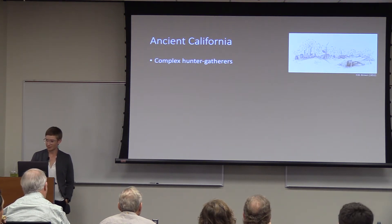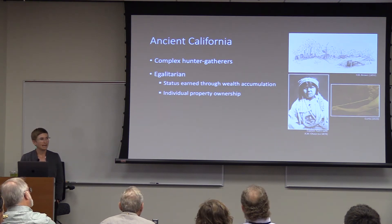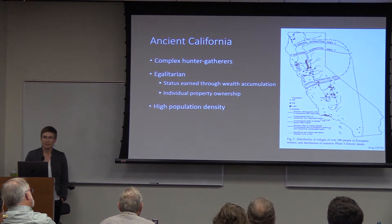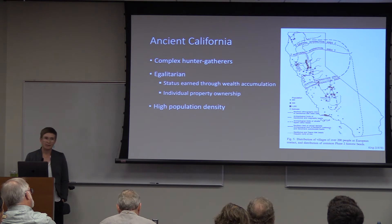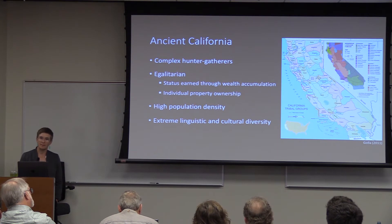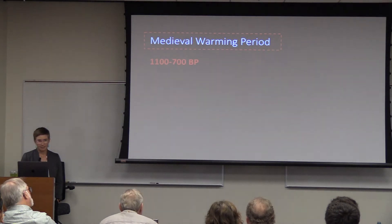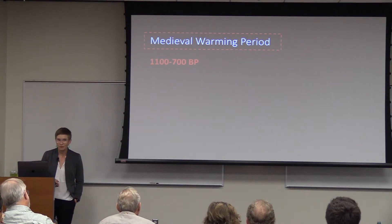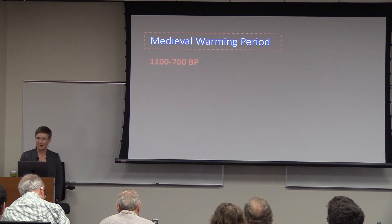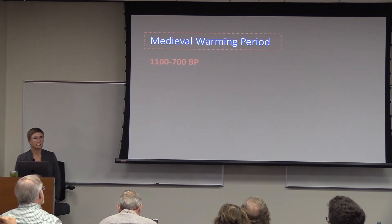Californians were complex hunter-gatherers — egalitarian, with status earned through wealth accumulation and individual property ownership. There was an extraordinarily high population density at contact with the Spanish, supported in part by the acorn economy, and extreme linguistic and cultural diversity rivaled only by Papua New Guinea. California was affected by a worldwide event called the medieval warming period, or the medieval climatic anomaly, which started around 1100 BP and lasted until 700 BP.